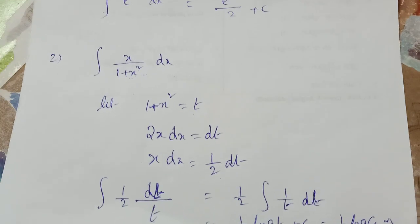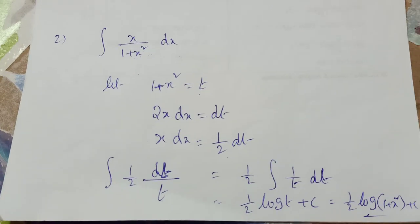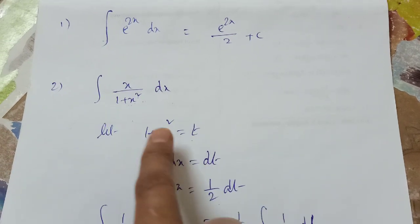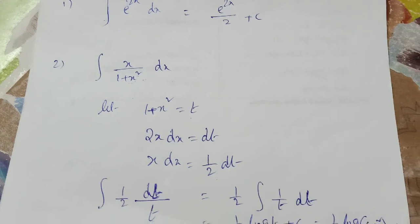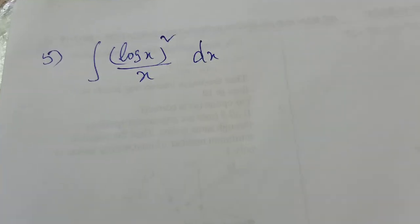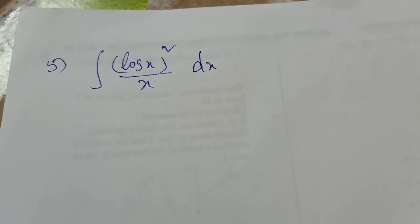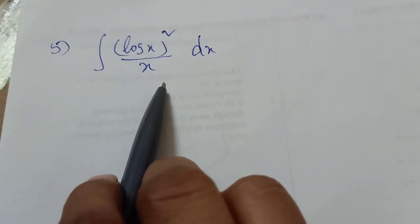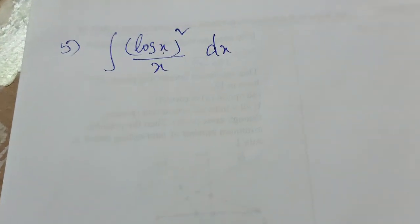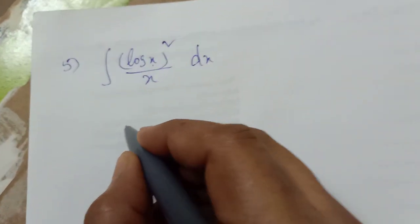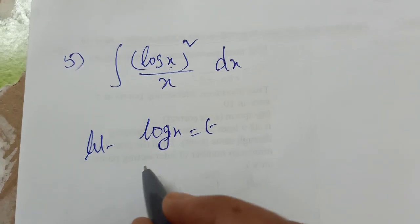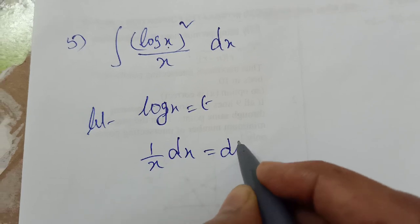To summarize the substitution method: first, pick a term to set equal to t such that its derivative appears as another term in the integral. Now the next problem: the integration of (log x)²/x dx. Here I take t = log x, because its derivative 1/x dx = dt appears in the integral.